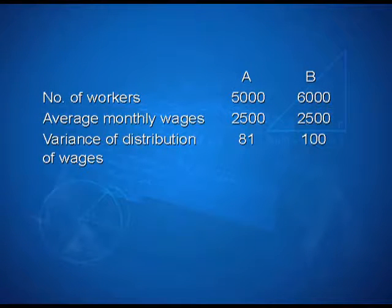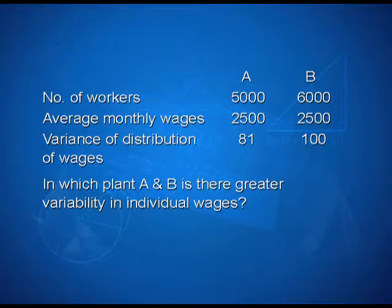Let us solve one example to understand this. Two plants A and B of a factory show following results about the number of workers and the wages paid to them. Here we have two plants A and B. Number of workers are respectively 5000 and 6000. Average monthly wages are 2500 for A plant and 2500 for B plant. Variance of distribution of wages is 81 for A plant and 100 for B plant. The question is, in which plant A or B is there greater variability in individual wages?